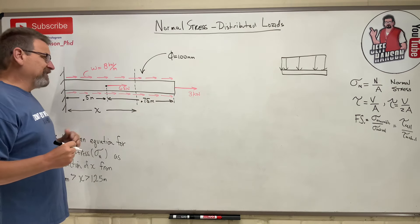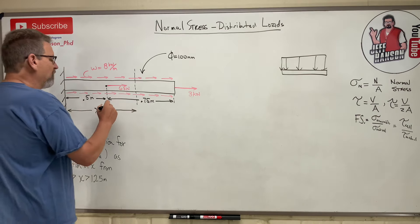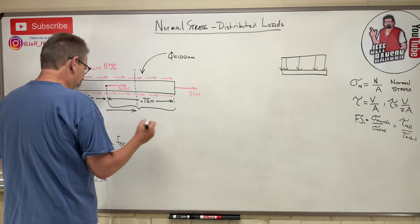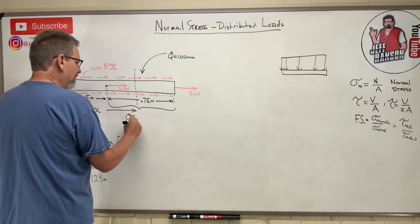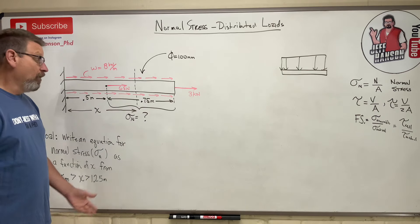So how do we do this problem? So they want from 0.5 to 0.75, in other words, anywhere in this range here, give me an equation, sigma n equals something for that part of the beam.